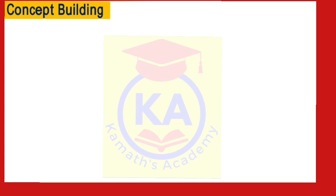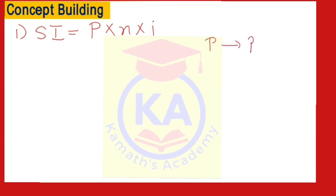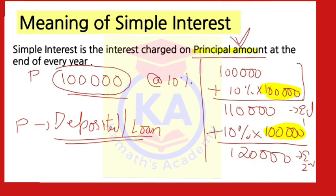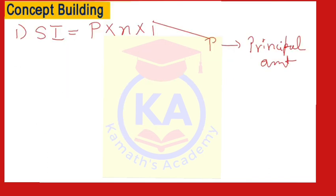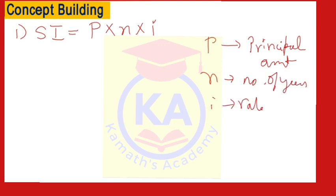Now we'll discuss formulas relating to simple interest. The first formula is: Simple Interest is equal to P into N into I. What is P? P is nothing but the principal amount — the amount deposited at the beginning, or amount taken as loan. What is N? N is the number of years. And what is I? I is the rate of interest — interest in decimals.